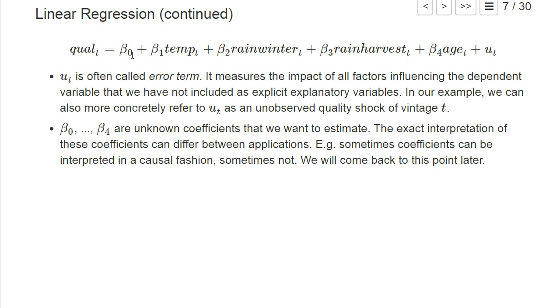Then we have these betas: beta zero, which is a constant, and one coefficient beta for each of the explanatory variables. These are the unknown coefficients that we want to estimate.